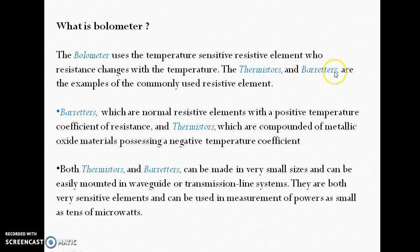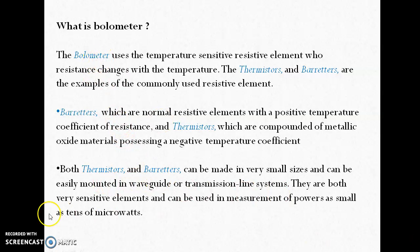The thermistor and barretter are elements made of different metals and have different sensitivity, in the sense that the change in resistance caused by a power change is different in the thermistor and the barretter. Both can be made in very small sizes and can be easily mounted inside transmission line systems, which is why they are used as bolometer elements. They can measure power as low as tens of microwatts.